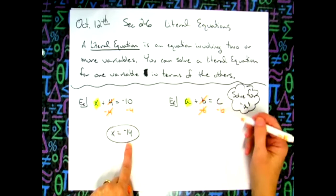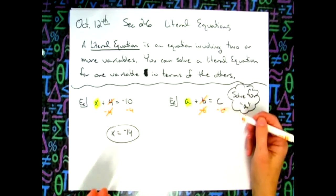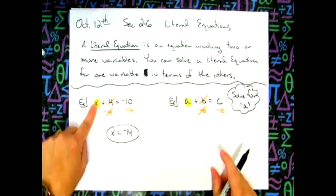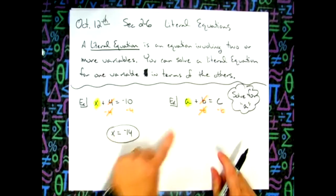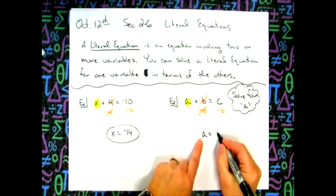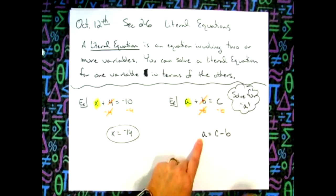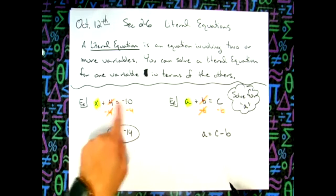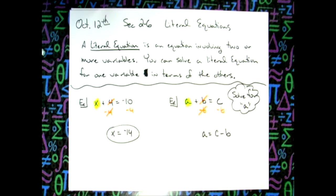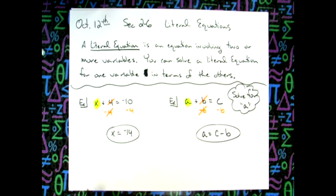I can't do the math the way I could with numbers, because I don't know what c or b are. So I just write it horizontally: a equals c minus b. That's what a literal equation looks like — I'm showing what I would have done if I had known the numbers.